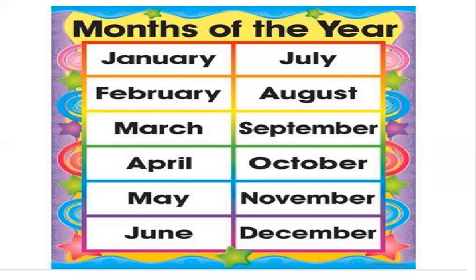A-U-G-U-S-T, August. S-E-P-T-E-M-B-E-R, September. O-C-T-O-B-E-R, October. N-O-V-E-M-B-E-R, November. D-E-C-E-M-B-E-R, December.